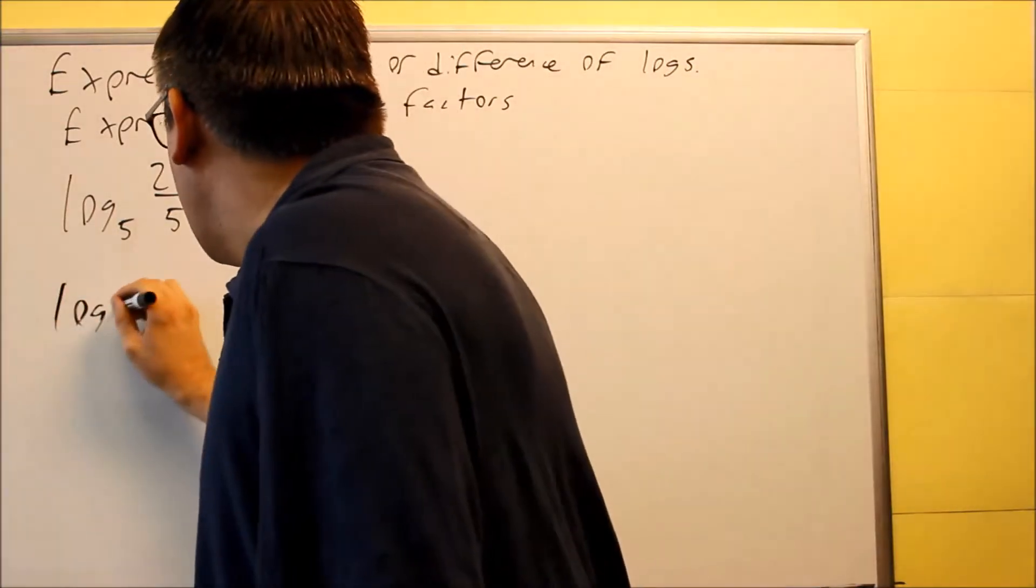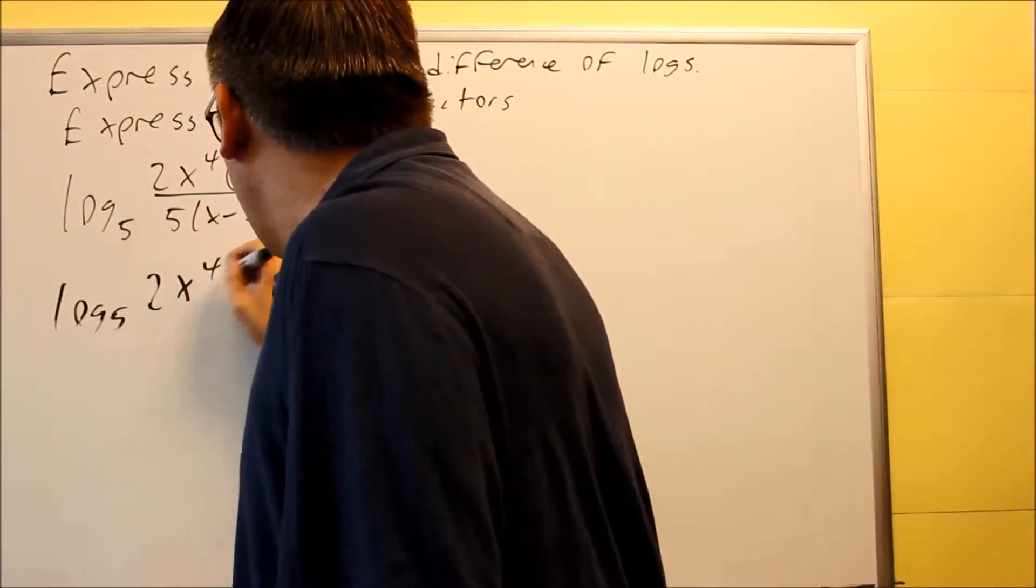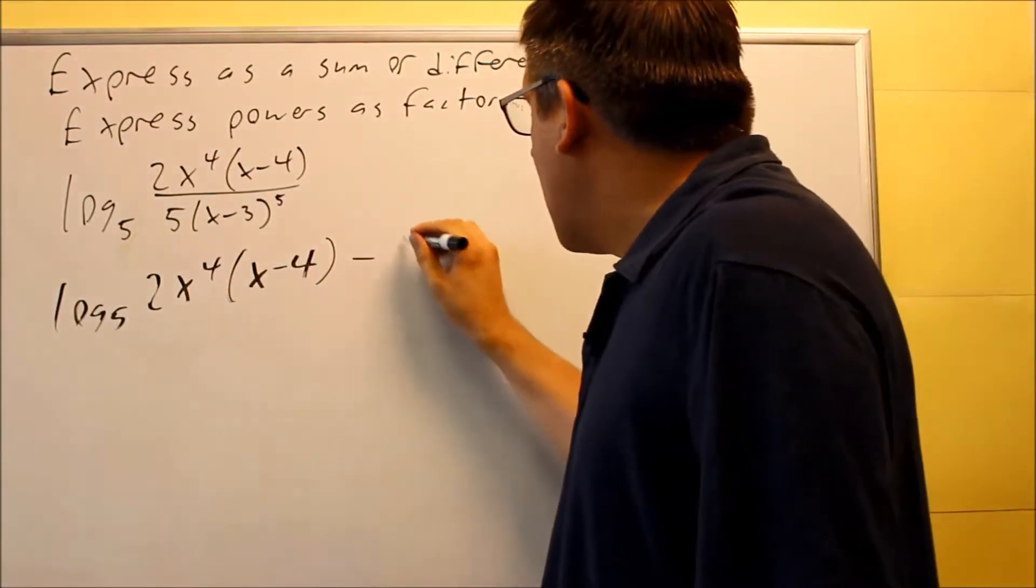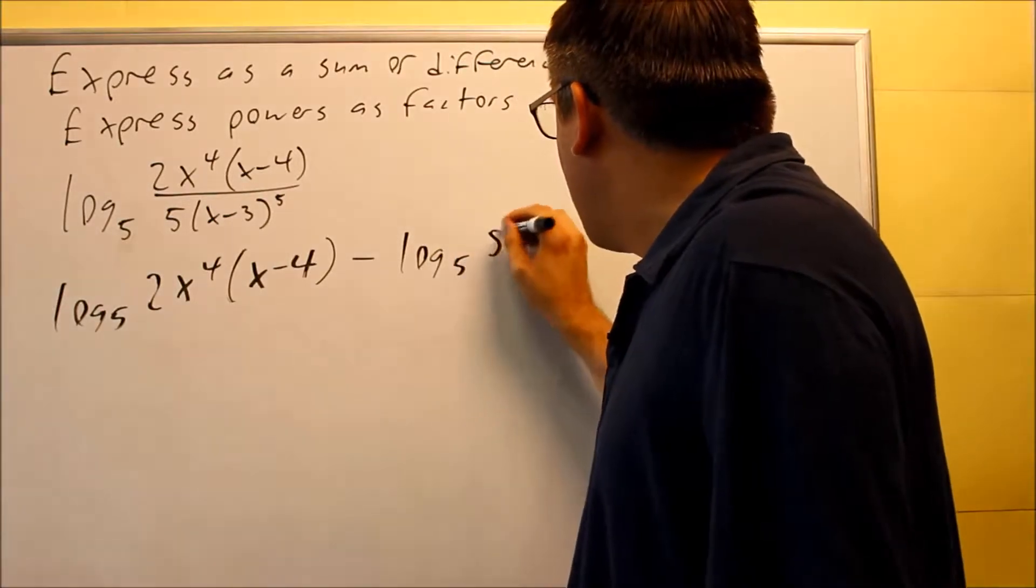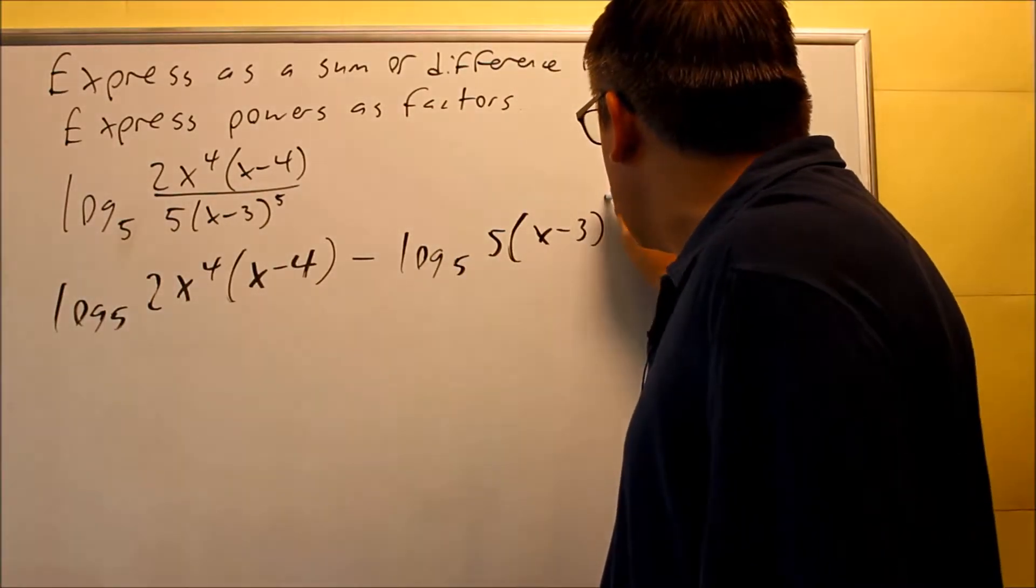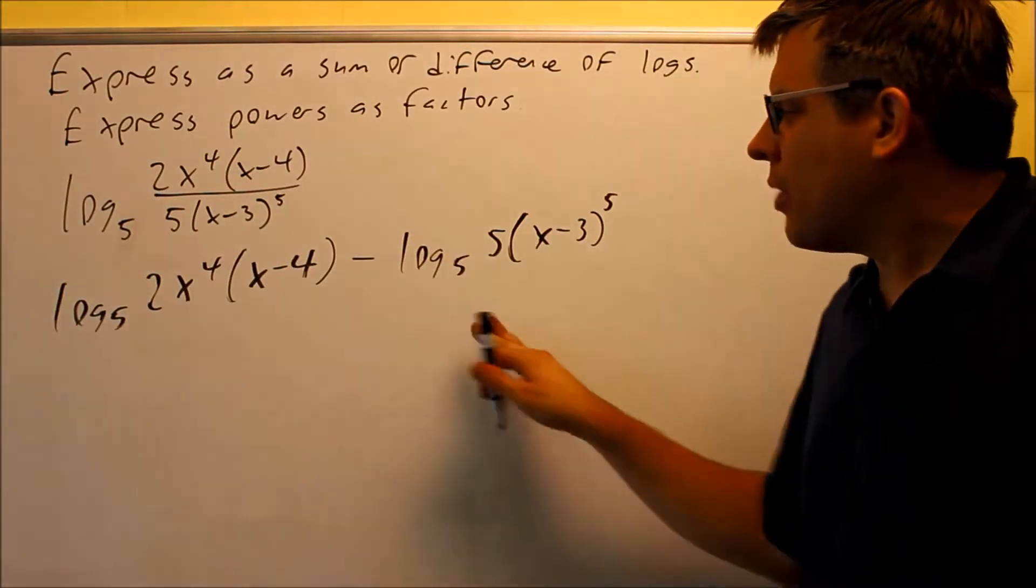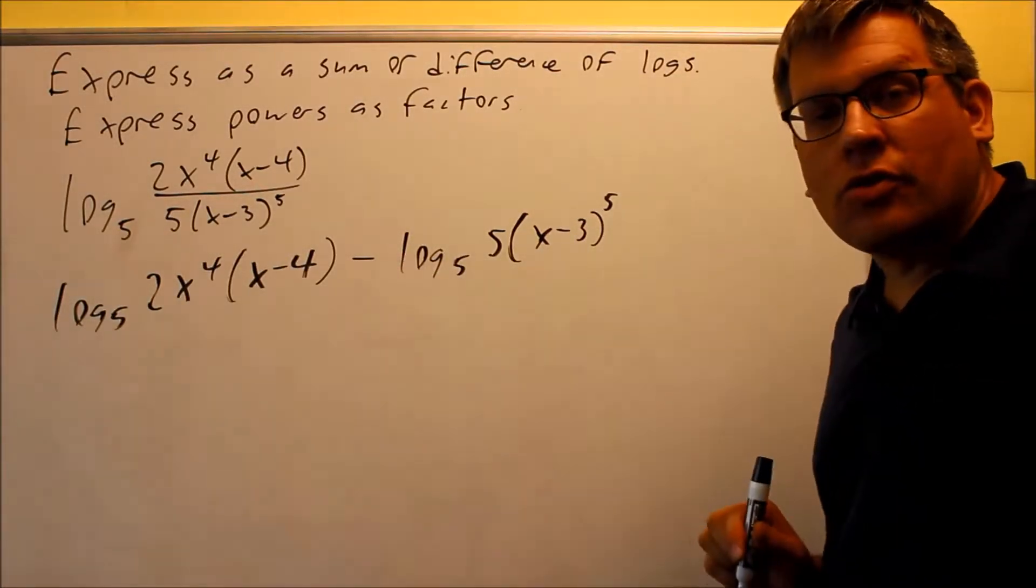So we're going to do log base 5 of 2x to the 4th times (x minus 4), and then we're going to do minus, and I have log base 5, 5 times (x minus 3) to the 5th power. So that's the first step, is just using rule number seven to break it apart, and now I have division turned into subtraction.